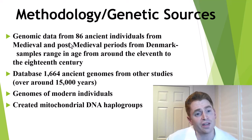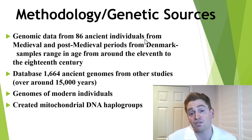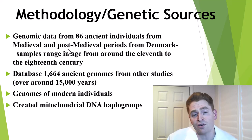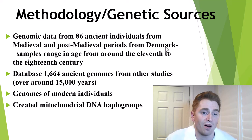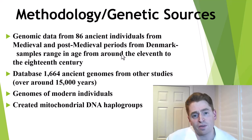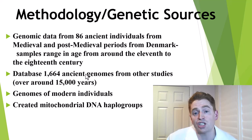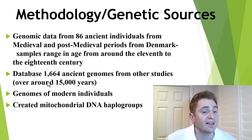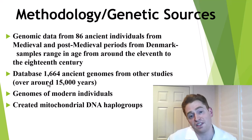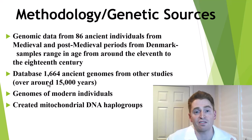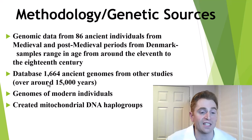Here is their methodology. They got genomic data from 86 ancient individuals — DNA from the remains of humans — from relatively recent individuals in the medieval and post-medieval periods from Denmark, with samples dating from around the 11th to the 18th century. They also used a database of 1,664 ancient genomes from other studies, covering a huge range going back to around 15,000 years, though it becomes increasingly rare to get a genome from human remains the further back you go.